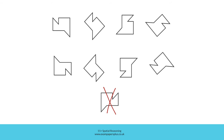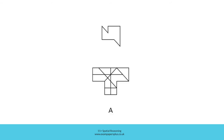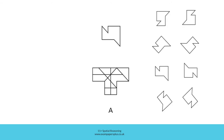Let's begin by considering answer option A. We can remind ourselves of all the potential rotated versions of the shape. It's useful to think about all of the different orientations the shape could be in. Let's look at the prominent features of the shape which could be hiding in A. We have two triangular sections or points within the shape, a triangular section which appears to be cut out, right angles which form a rectangular part to the shape.